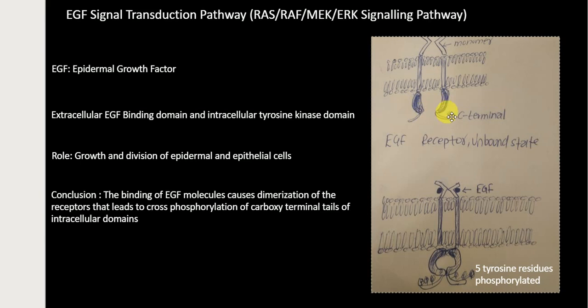The EZF receptor consists of two identical monomers — you can see one monomer and another monomer here. These two monomers are identical, each with an extracellular EZF binding domain and an intracellular tyrosine kinase domain. This part of the monomers is spanning the membrane.